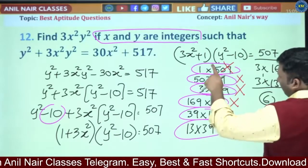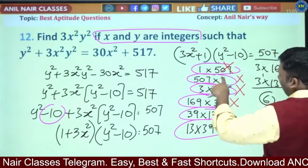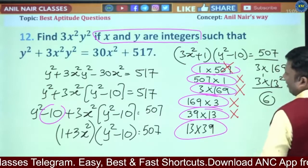Next case: y² - 10 = 13, y² = 23. Not possible.